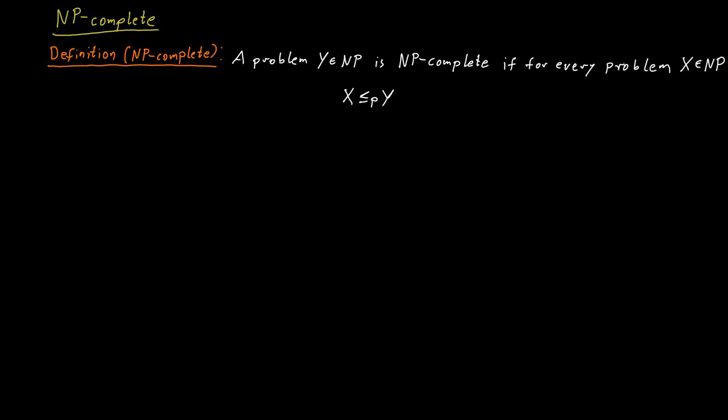This is one of the most important definitions that you will hear from me, and therefore I will repeat it again. So a problem is NP-complete if it is in NP, and if every problem in NP polynomial time Karp reduces to Y.